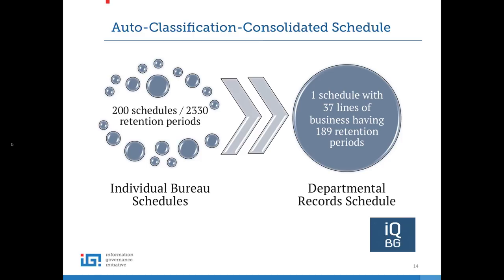Users are not allowed at all to access the journaled email system we've built. It is held in the email archive, which is available only for investigation, congressional requests, audits, e-discovery, FOIA, and privacy requests.